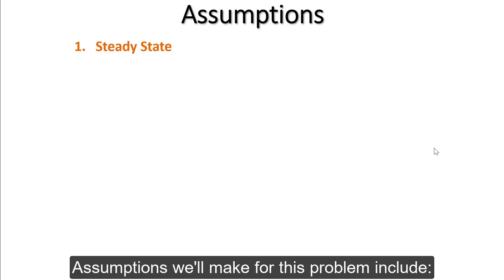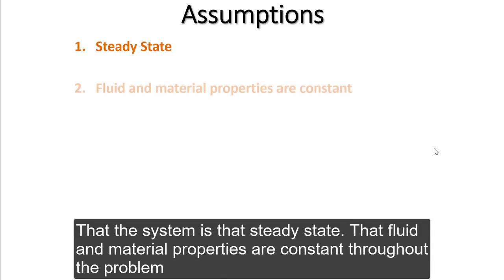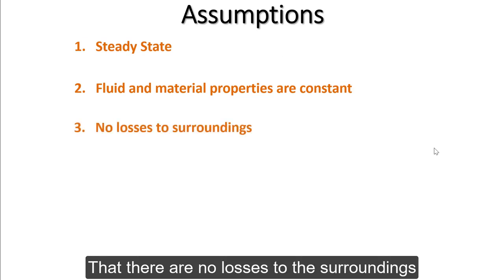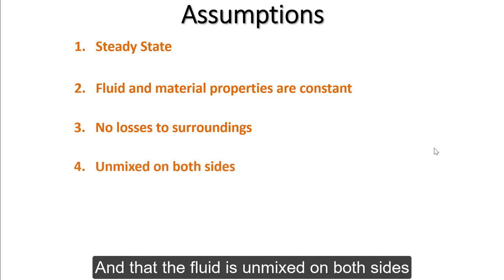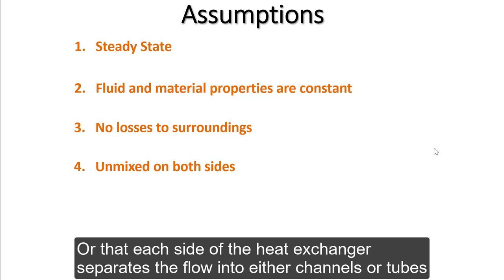Assumptions we'll make for this problem include that the system is at steady state, that fluid and material properties are constant throughout the problem, that there are no losses to the surroundings, and that the fluid is unmixed on both sides — meaning each side of the heat exchanger separates the flow into either channels or tubes.